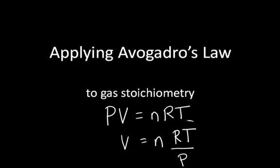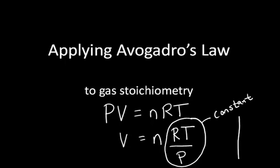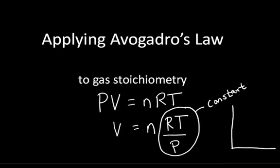Keeping T and P constant, this factor collapses into one constant, and we can see that volume is equal to the number of gas moles times this constant. The constant will vary with temperature and pressure, but as long as you're holding them constant, the volume of the gas will be proportional to the number of gas moles.